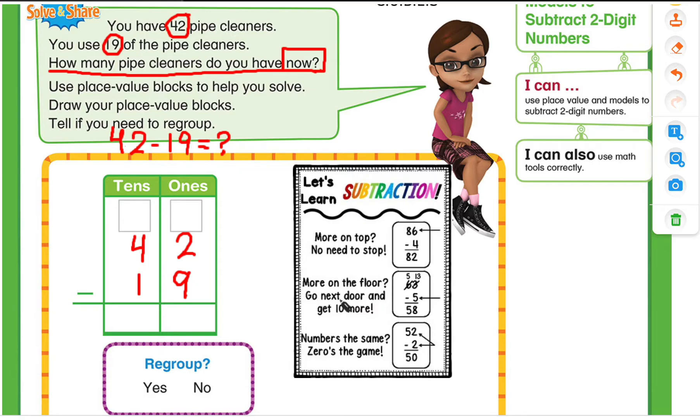Let's take a look at the next situation. More on the floor. You go next door and get 10 more. So let's take a look here. Yes, we have more on the floor. That means the number at the bottom or the number at the floor is greater than the one on the top. So more on the floor. You go next door and get 10 more. So that means we are going to take one 10 from here. So they had four 10's before. Now we took one 10 away. So they are left with three 10's.